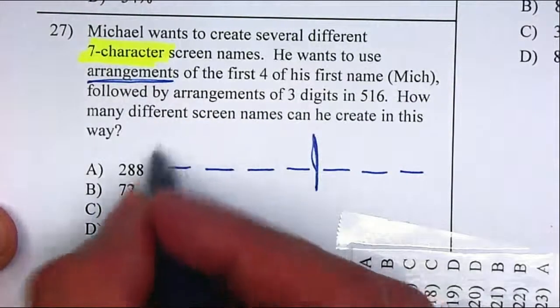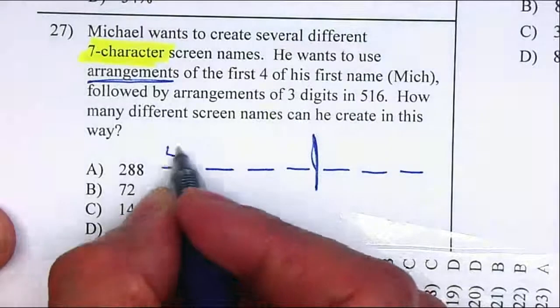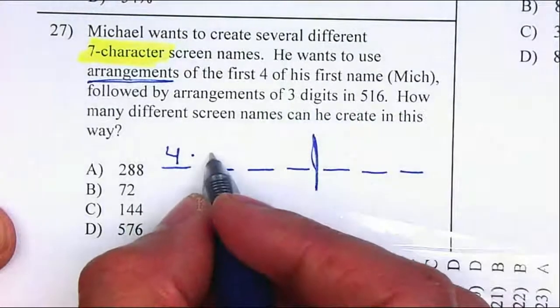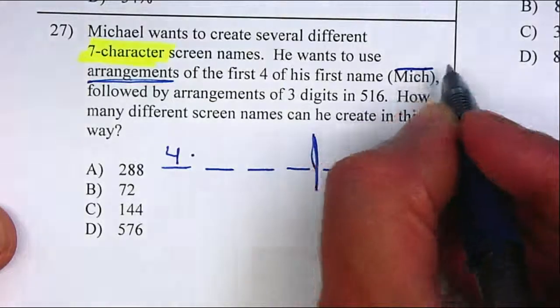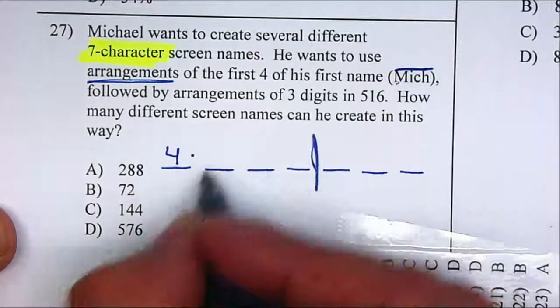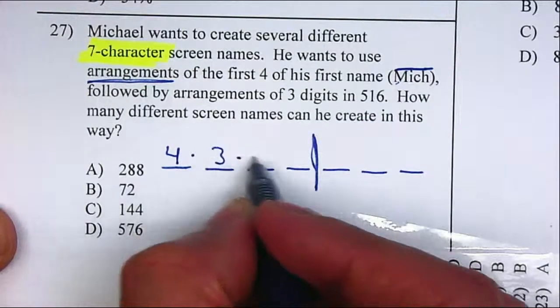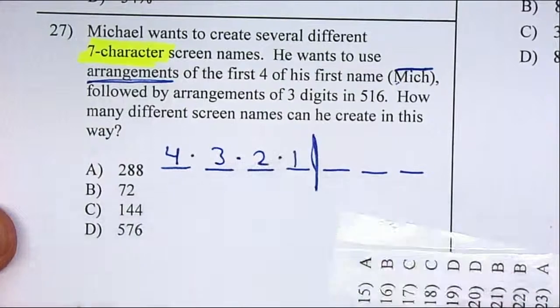So how many letters are available for the first one? Four. How many letters are available for the second one? If you only are able to use any of those four, so once you use one, how many are available for the next one? Three. For the next one, two, and for the next one, one.